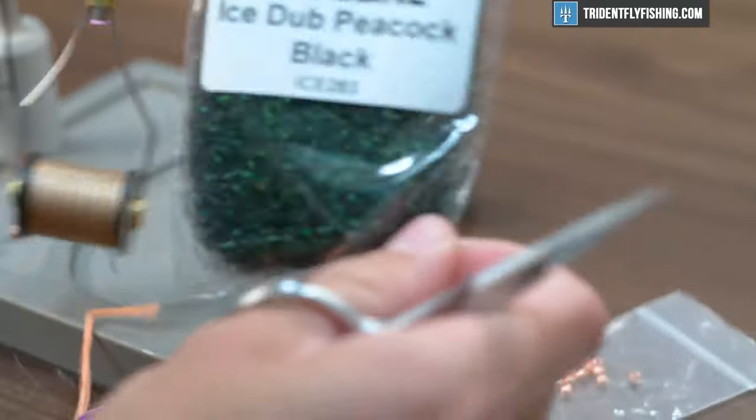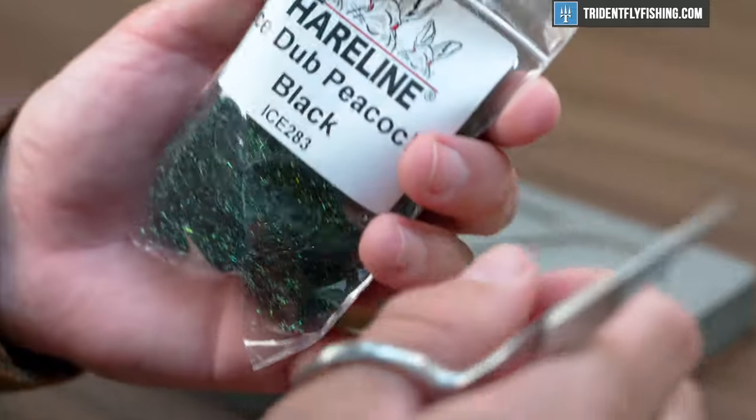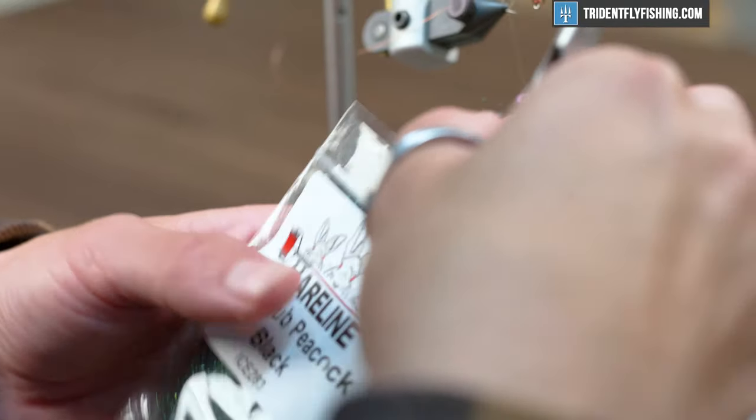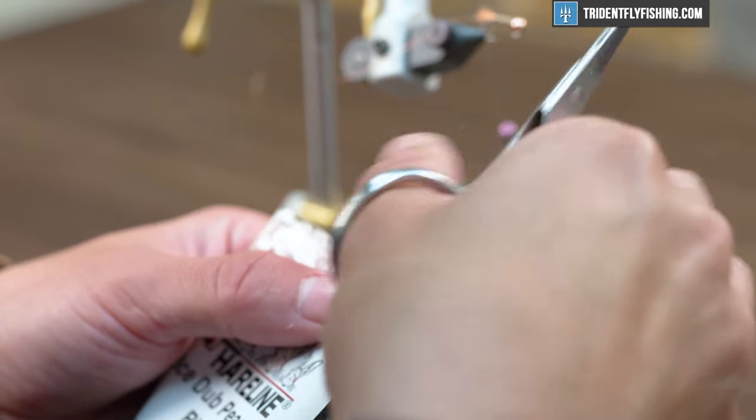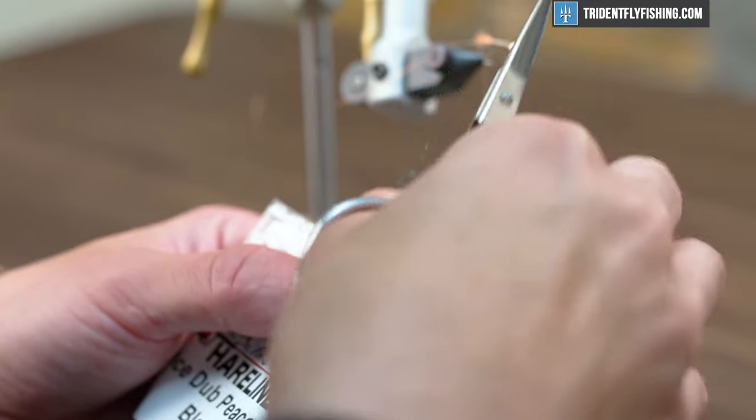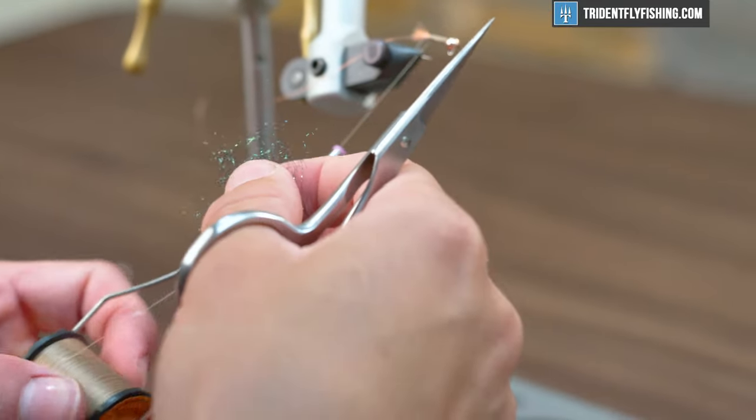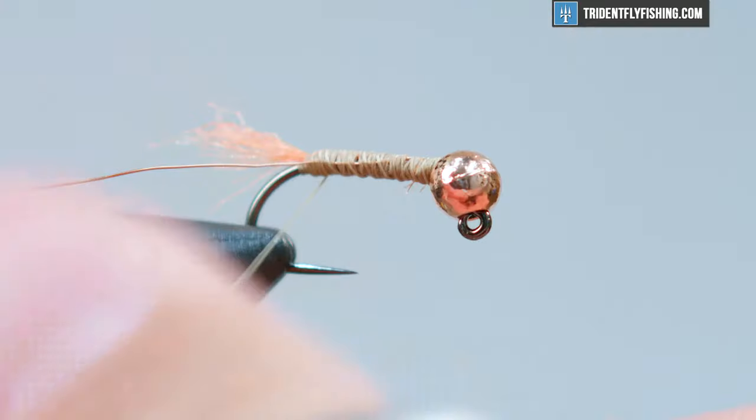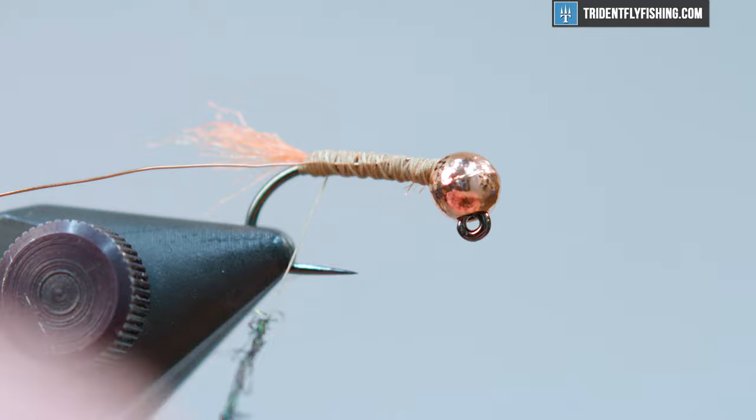We're using ice dub. This is peacock black. This is a fly you can tie dark, light, really any variety of colors you can come up with. But they just stocked a bunch of trout in southern Maine and these dark shiny colors tend to be pretty effective for them. We want to get this tightly wound on the thread so we can get that slim profile.